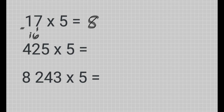Since the number you multiplied by 5 is an odd number, the last digit of the product will be 5. So therefore 17 times 5 is equal to 85.